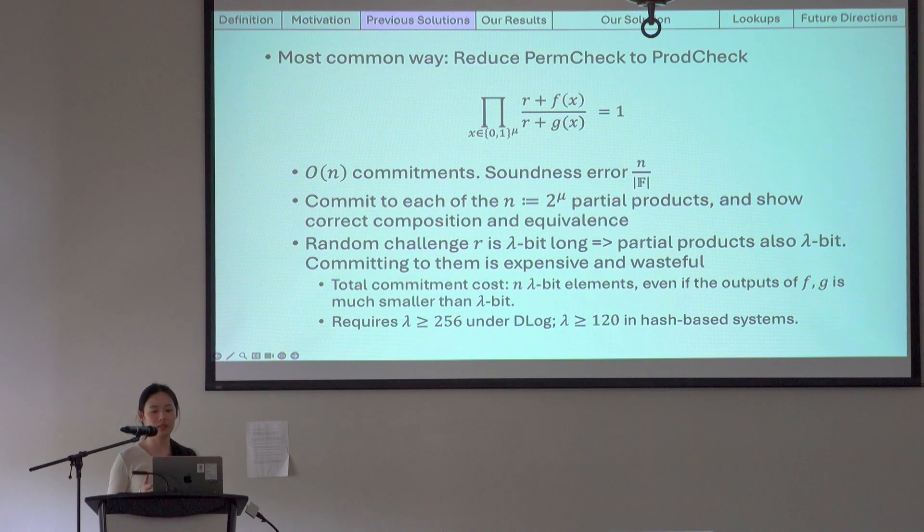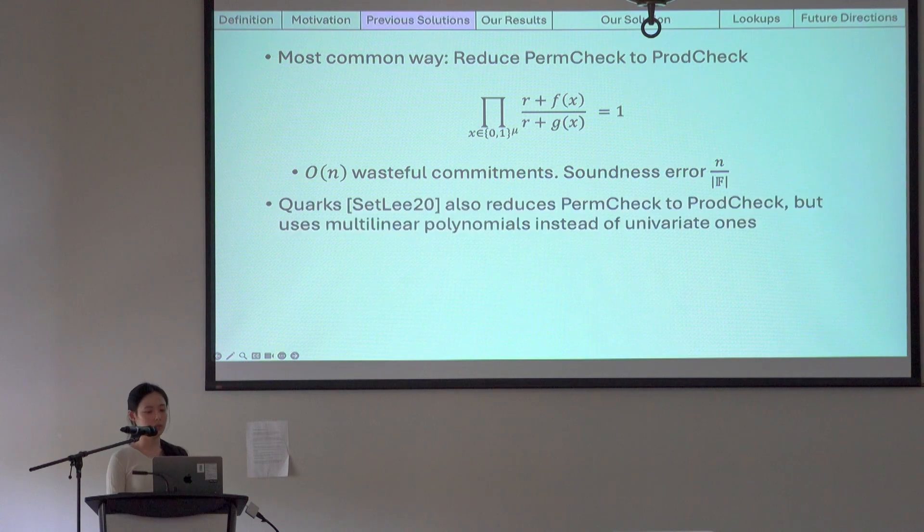Lambda is required to be at least 256 under discrete logarithm assumption and at least 120 in hash-based systems. So, for example, say all the table entries, the outputs of f and g are only 32 bit long, but we are using a 256 bit field, then committing to these partial products incurs an 8 times overhead.